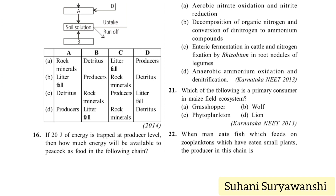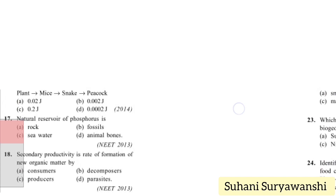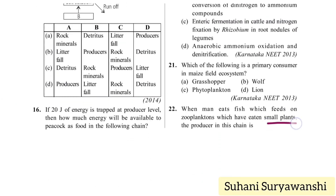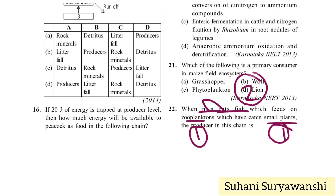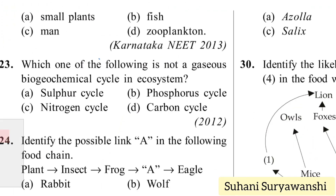When man eats fish which feeds on zooplanktons which have eaten small plants, the producer in the chain is small plants. The chain is: small plants → zooplankton → fish → man. Small plants are producers, zooplankton is the first consumer, fish is the second consumer, and man is the tertiary consumer.